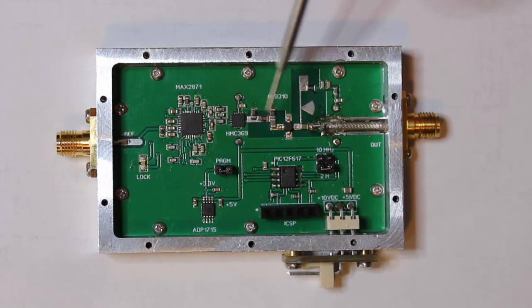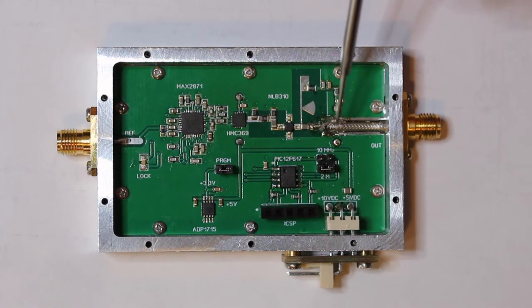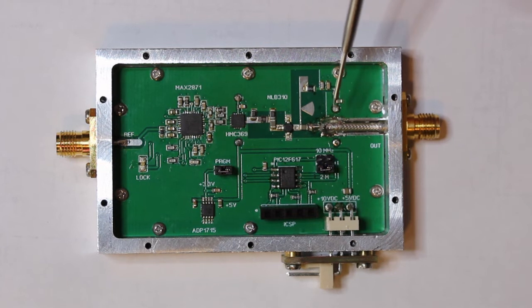Here we have an attenuator, and here the final amplifier, it's a Corvo NLB310, having at the output conventional structure. I have used a flexible coaxial cable, trying to avoid the losses of the FR4 substrate.